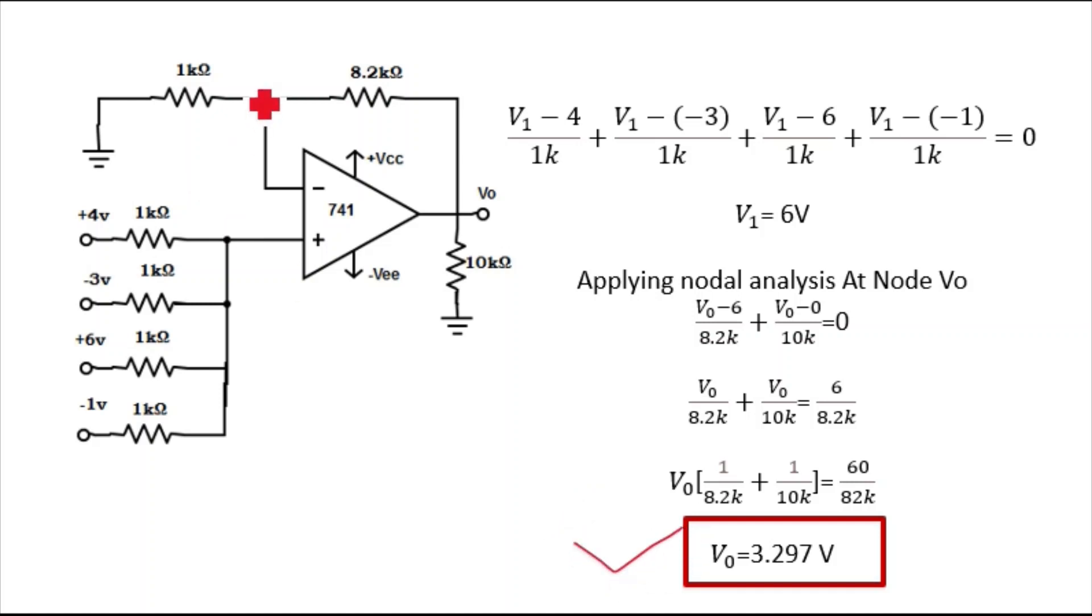Why we didn't consider this branch? Because here it is already connected to the ground and we already know the potential at this one. We don't want to consider this because we know the potential at this branch. So directly applying nodal analysis at this branch, you can directly get the output. V0 equals 3.297. I hope you're able to understand. If you like my video, please like and subscribe my channel. Thank you so much.